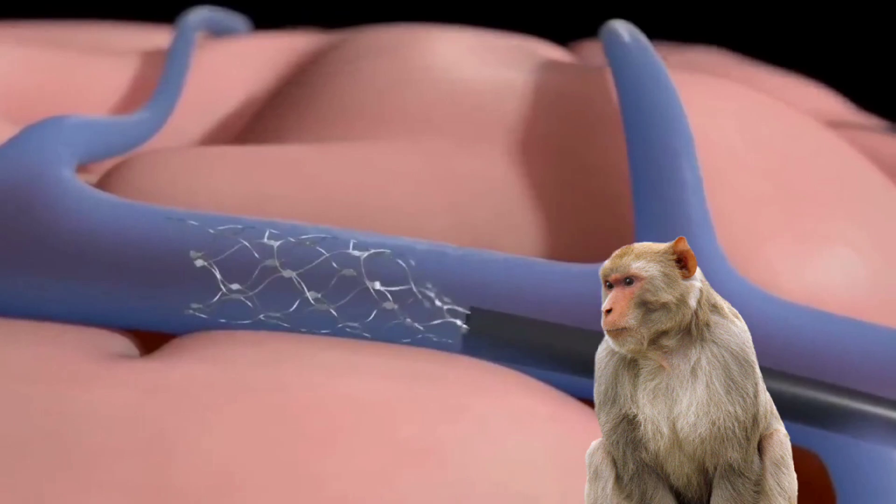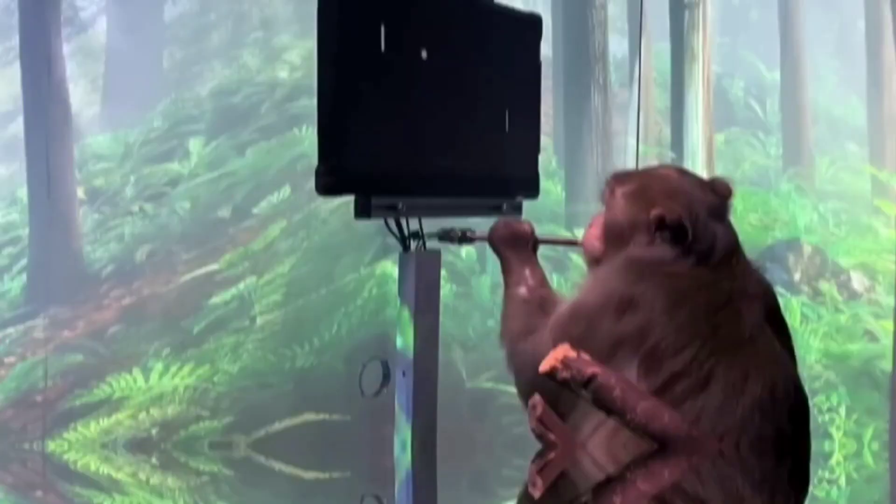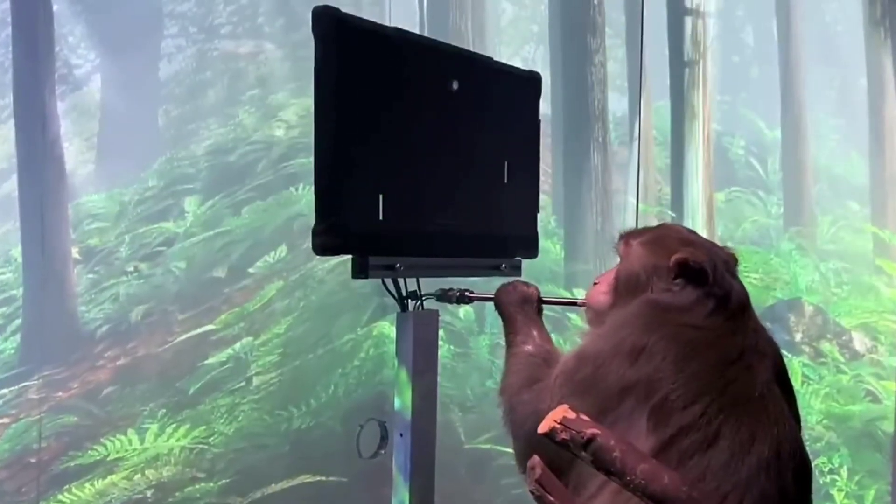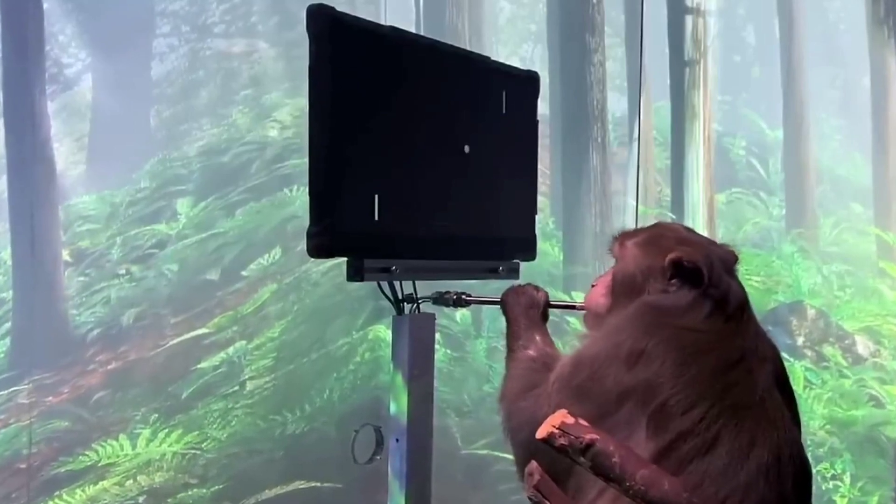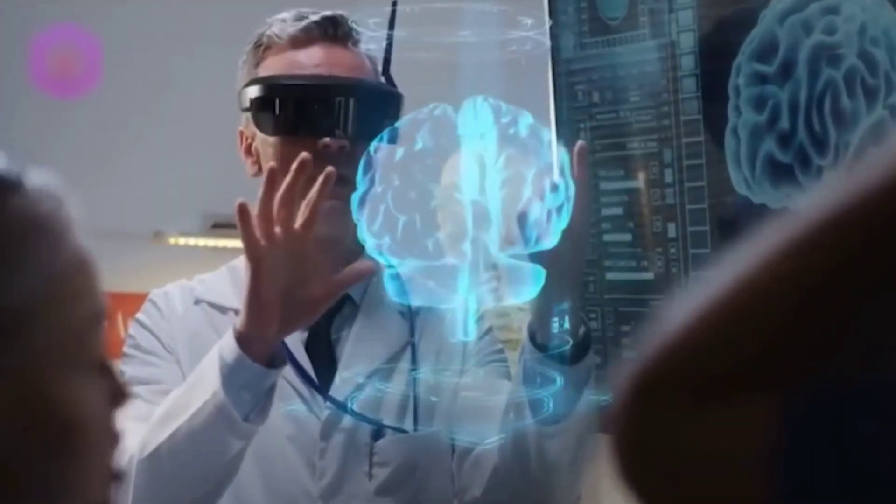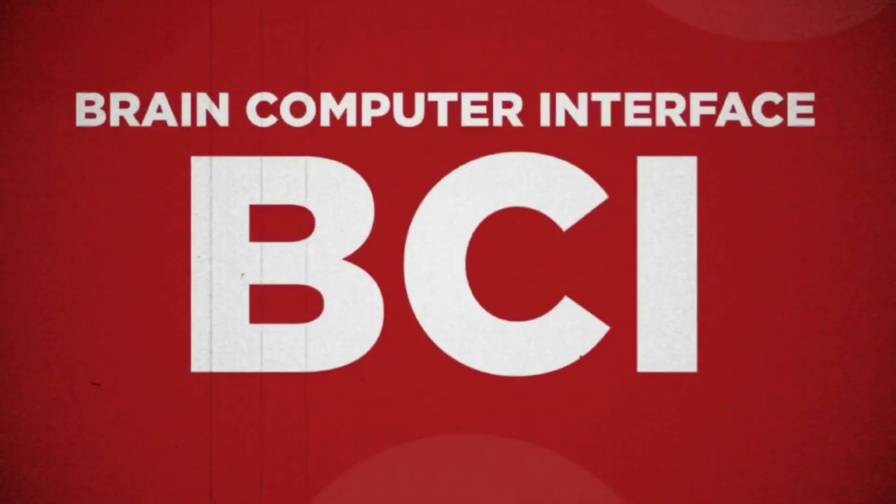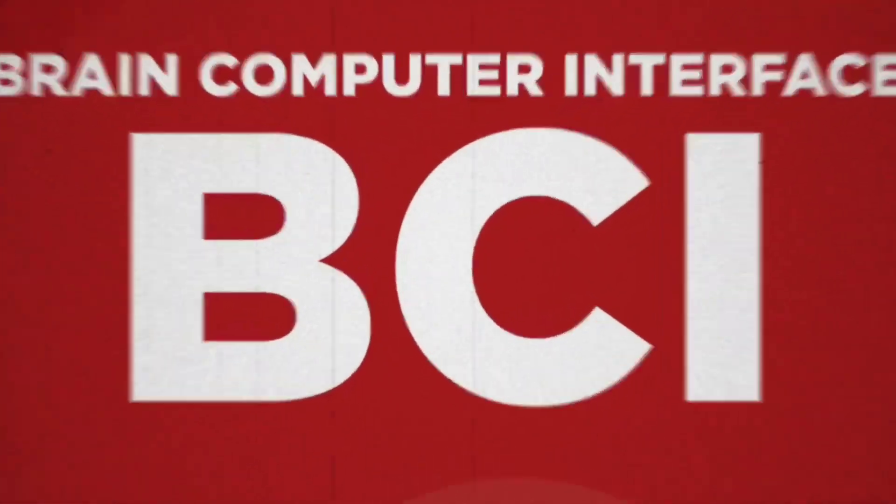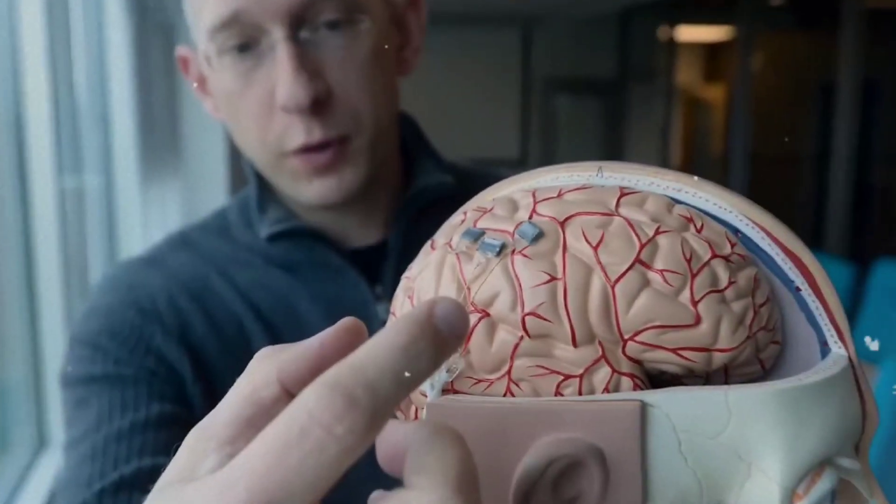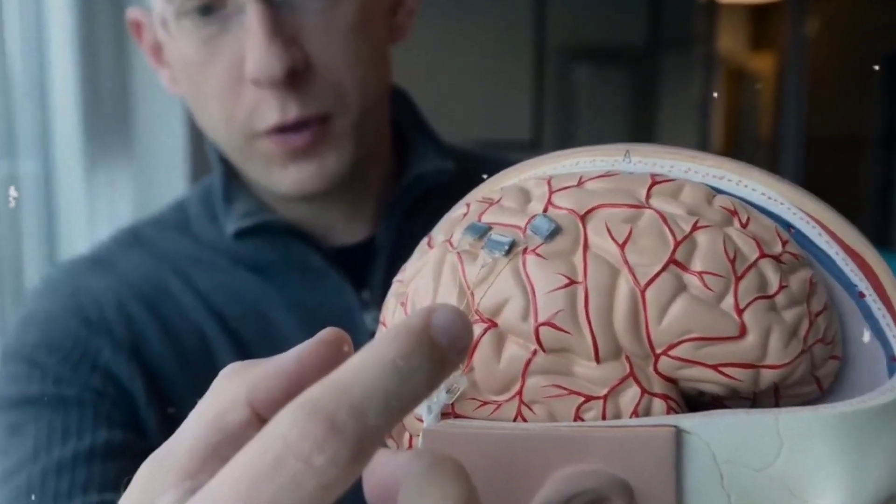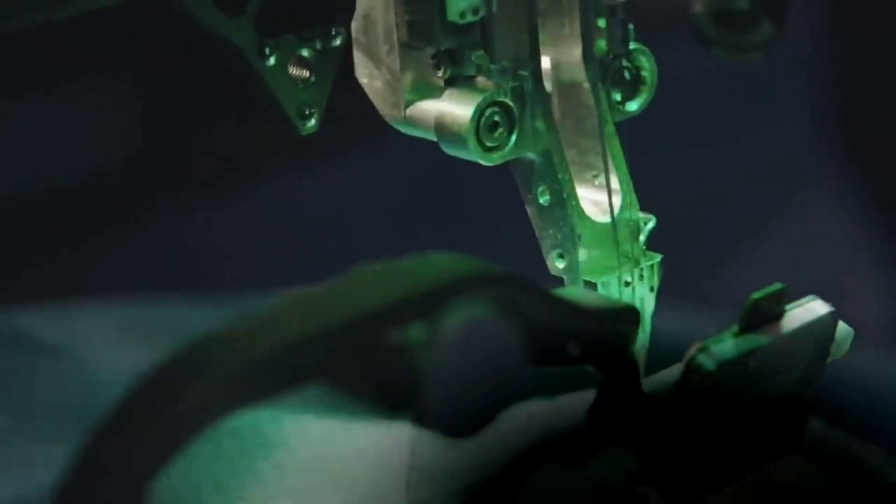Mind-blowing progress includes implanting a device in a monkey that helps him play a ping-pong game just by its thoughts. Neuralink has made it work by digital telepathy, permitted by BCI technology. Elon, even after performing these mind-boggling experiments, wasn't satisfied and decided to implant these devices in human beings. Do you think Musk will be able to do it?